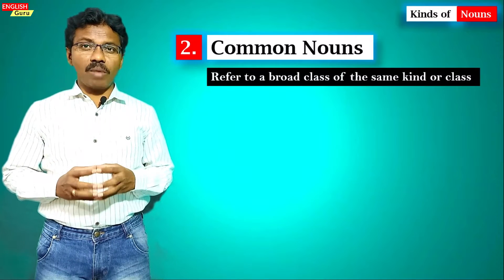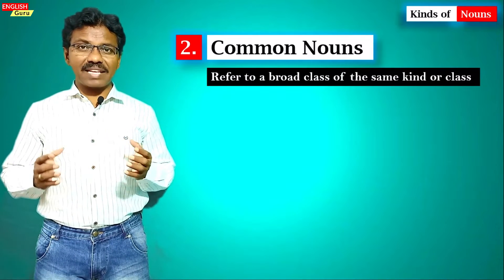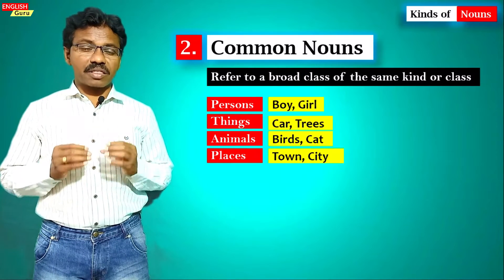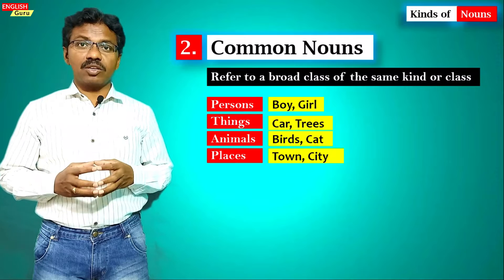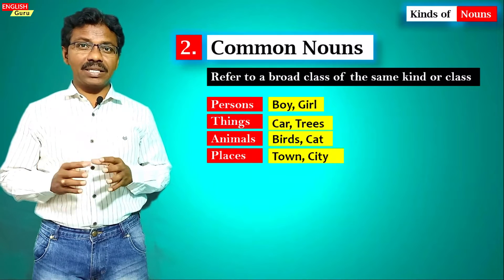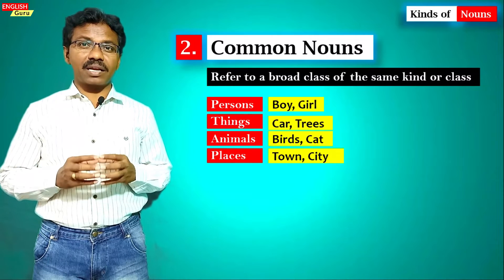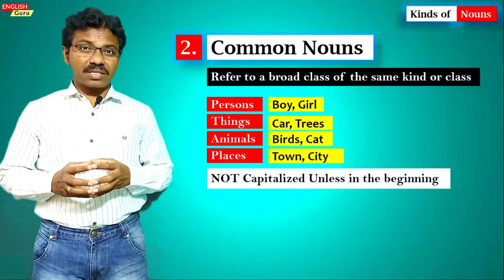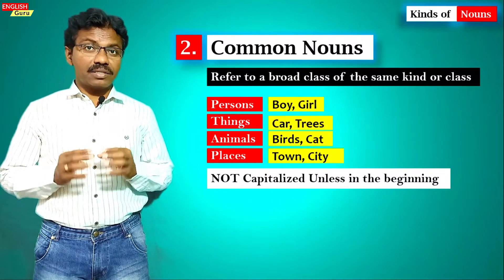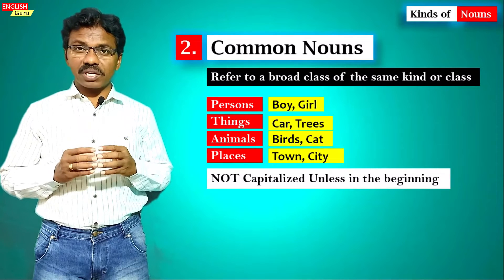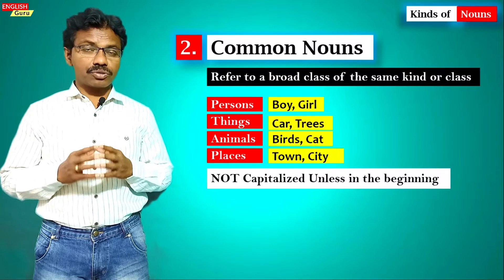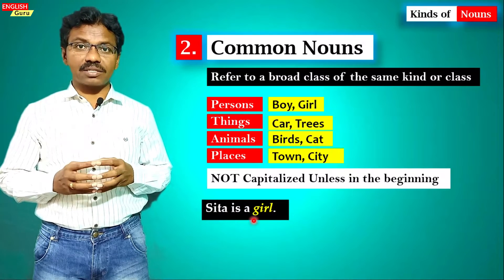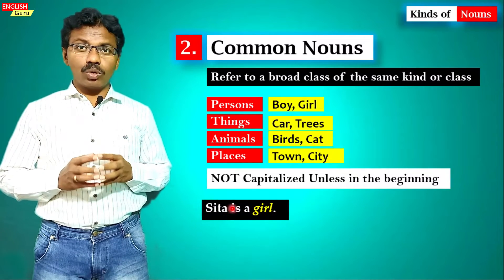The second kind is common nouns. Common nouns refer to a broad class of the same kind — persons, things, animals, and places. Persons like boy and girl, things like car and trees, animals like bird and cats, places like village, town, and city. Common nouns are not capitalized — we should not start them with a capital letter wherever they appear.